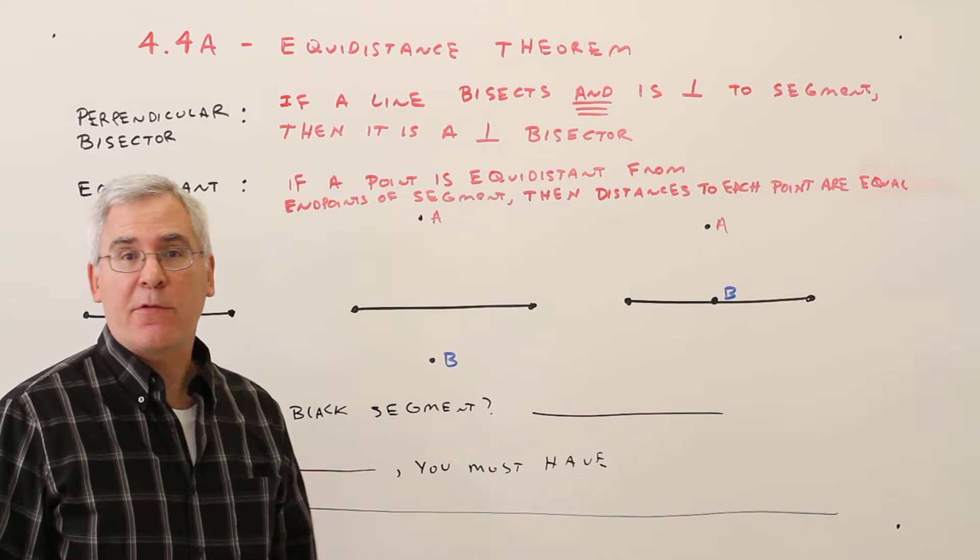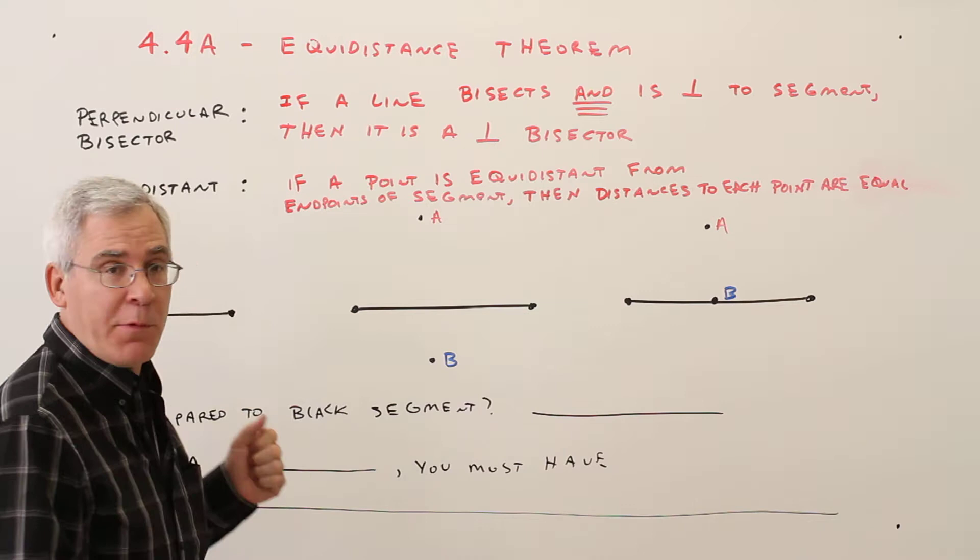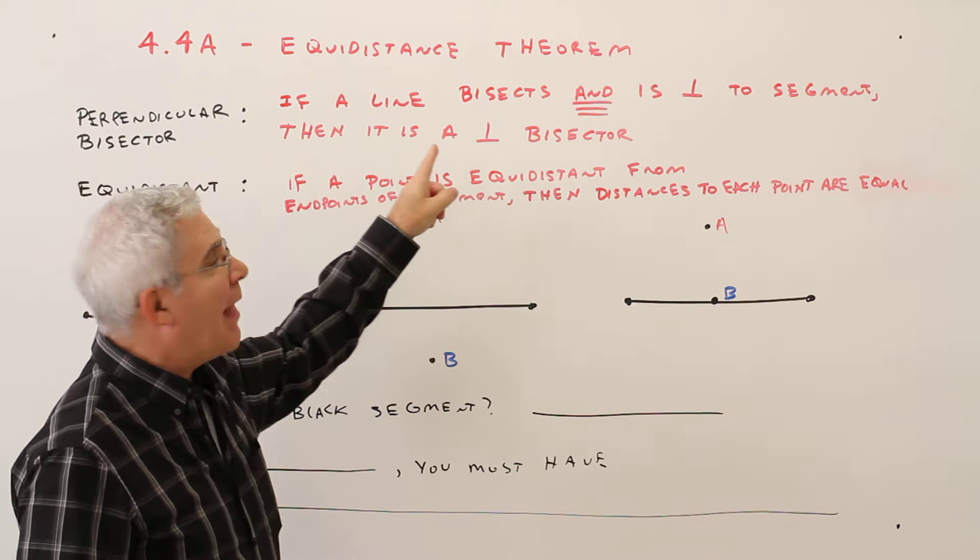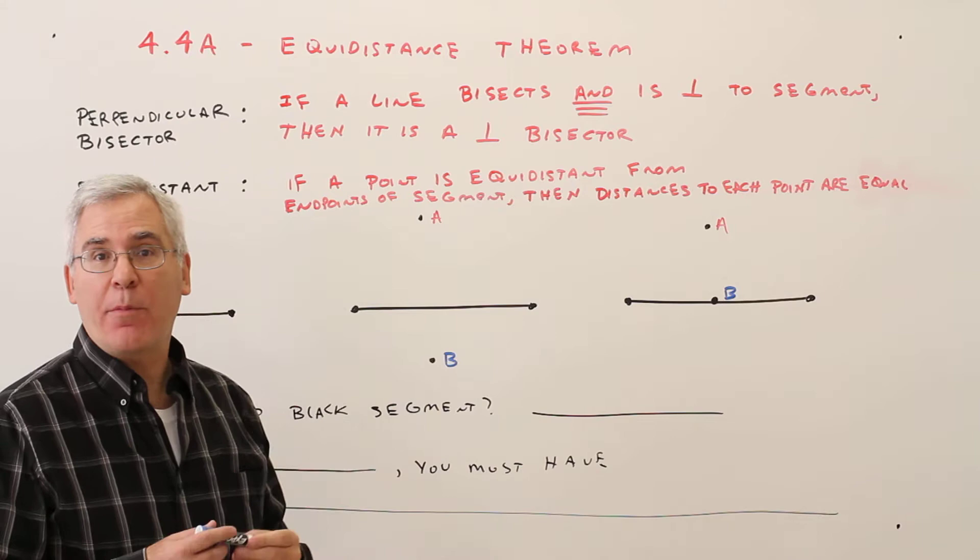Welcome to video 4.4a, the equidistance theorem. First we have to define a few terms. The first is perpendicular bisector. If a line bisects and is perpendicular to a segment, then it is a perpendicular bisector.